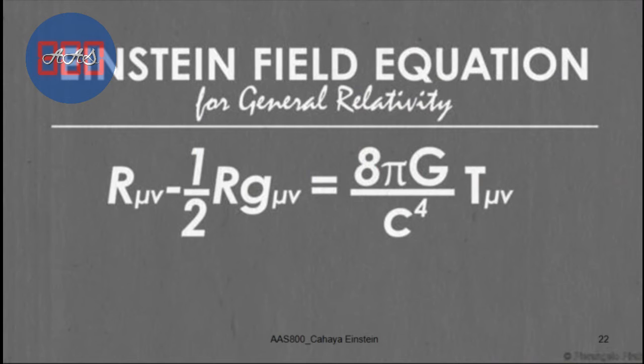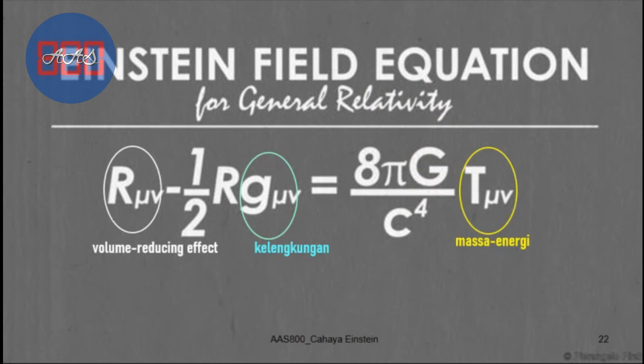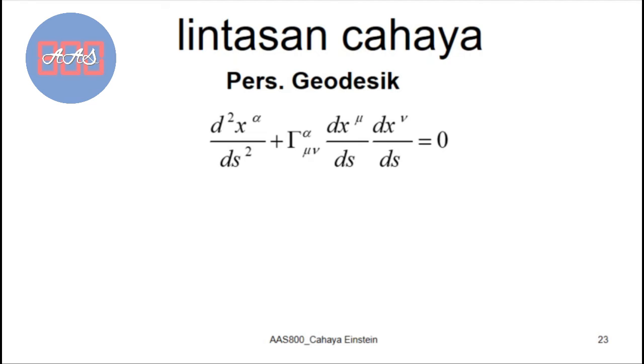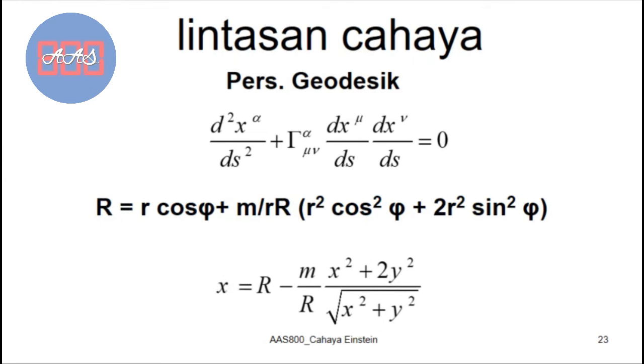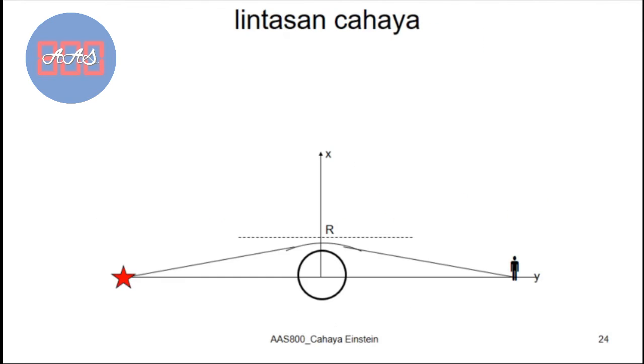The third, Einstein also formulated what is known as field theory, Einstein's field theory, which describes the curvature of space-time, mass-energy distribution, and the effect of volume reduction. One prediction from Einstein's field theory is, so from this equation, this equation states that the path of an object passing through mass M will experience deflection. So if the mass is large, this will experience deflection. That's a prediction from a theory.